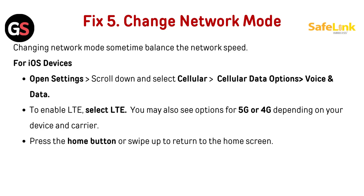Fix 5: Change network mode. You should have higher data speed — changing the network mode to 4G can fix the issue. For iOS devices, open the Settings app on your iPhone, scroll down and select Cellular, tap on Cellular Data Options, then select Voice and Data, and choose the network mode to enable LTE. You may also see options for 5G or 4G depending on your device and carrier. Press the home button or swipe up to return to the home screen.